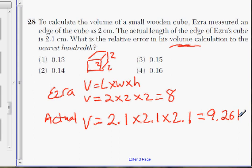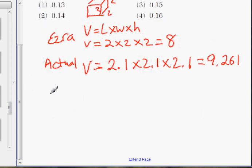Now the relative error formula, depending on how your school teaches it, it could be the error measurement, the wrong measurement, or Ezra's measurement, minus actual measurement, divided by actual measurement.